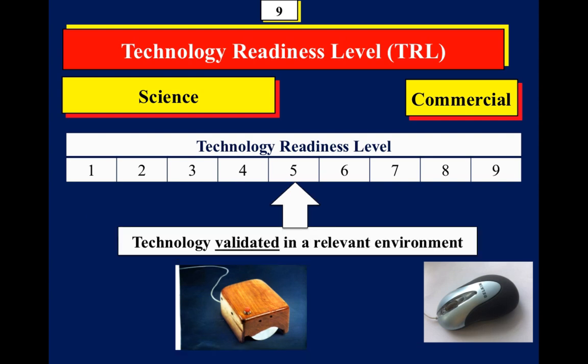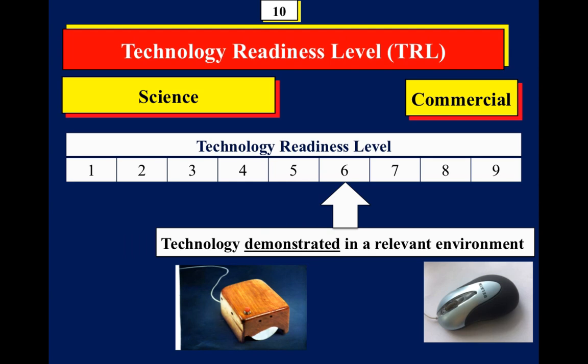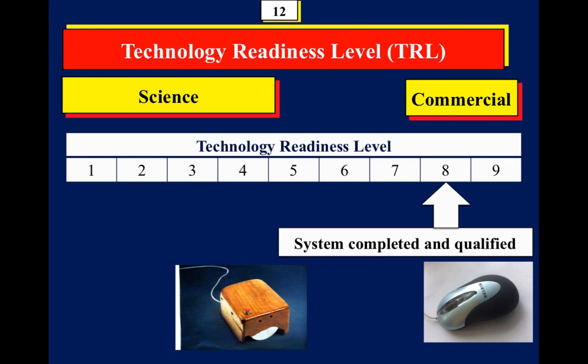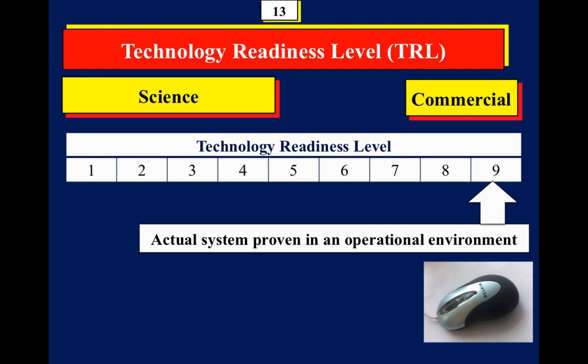TRL five is where the technology is validated in a relevant environment — it's tested but not yet part of the system. TRL six means it's demonstrated in a relevant environment, though still not integrated into the system. At TRL seven, it's demonstrated in an operational environment and goes into a real system. TRL eight means the system is complete and the new component is integrated, covering standards and regulations. TRL nine means the product is on the market.